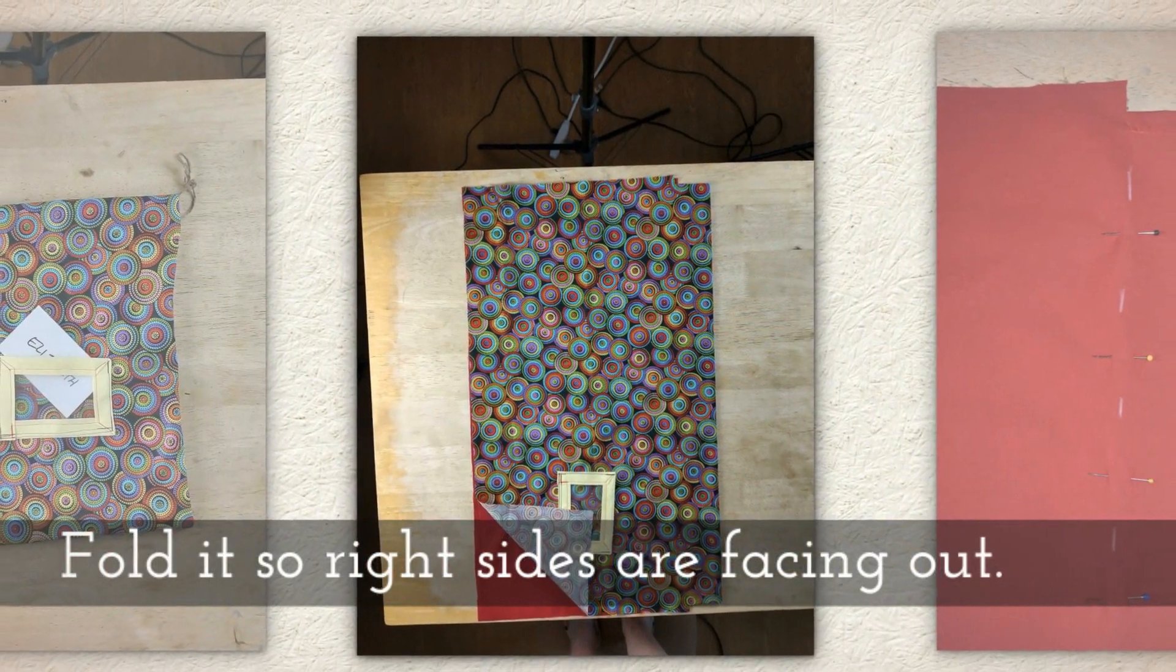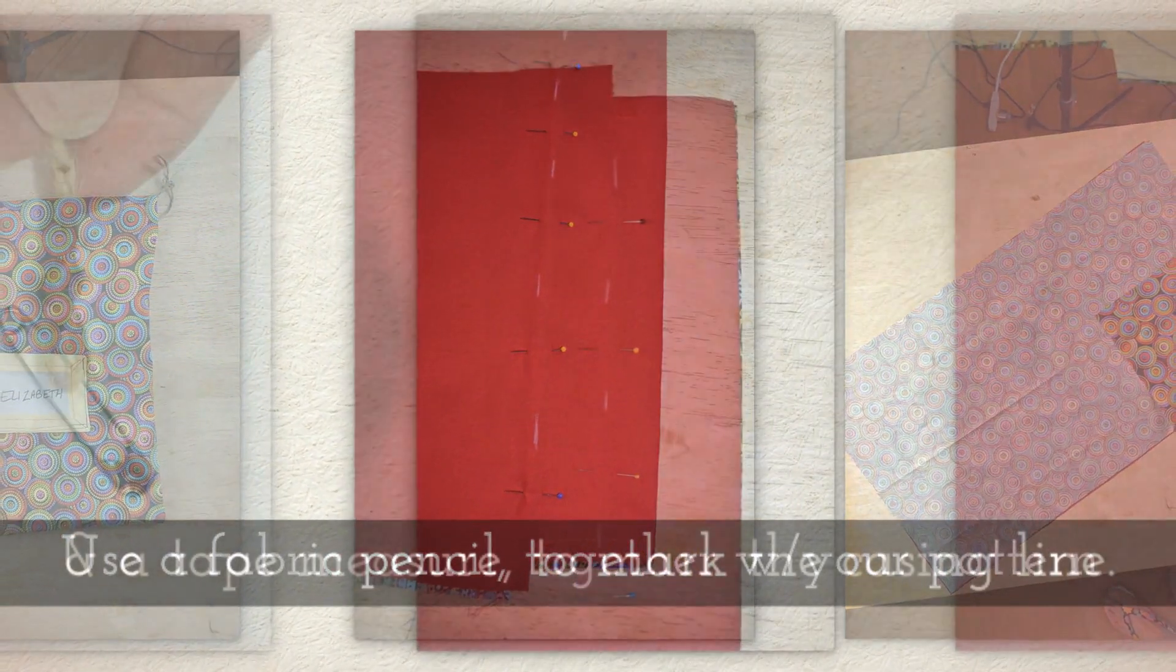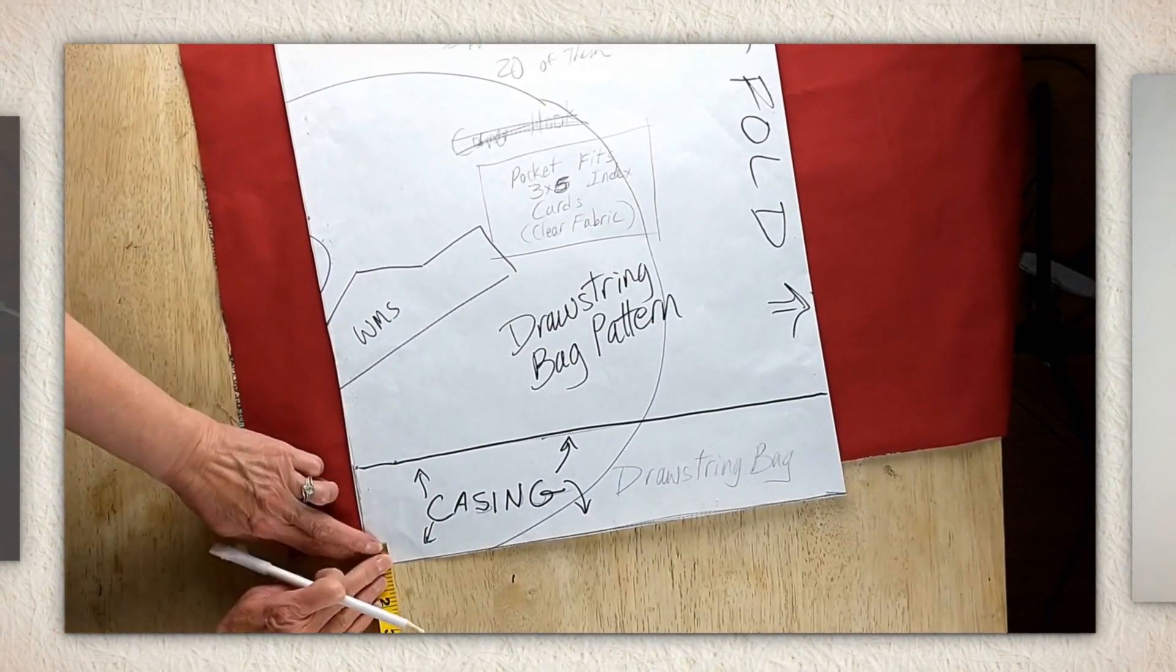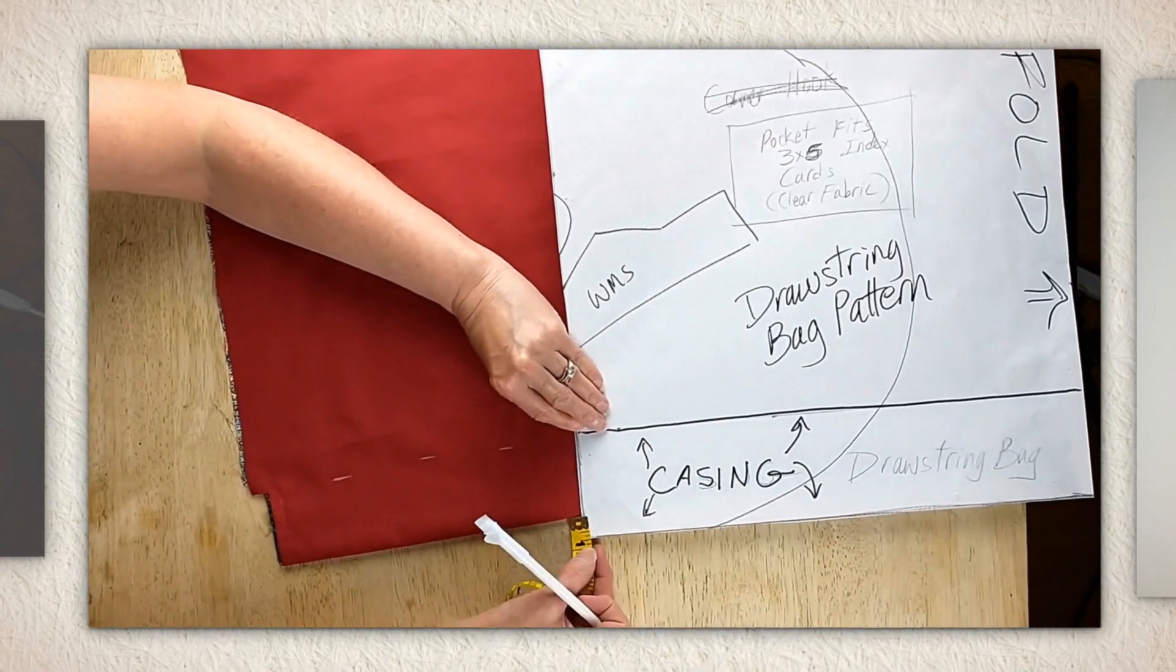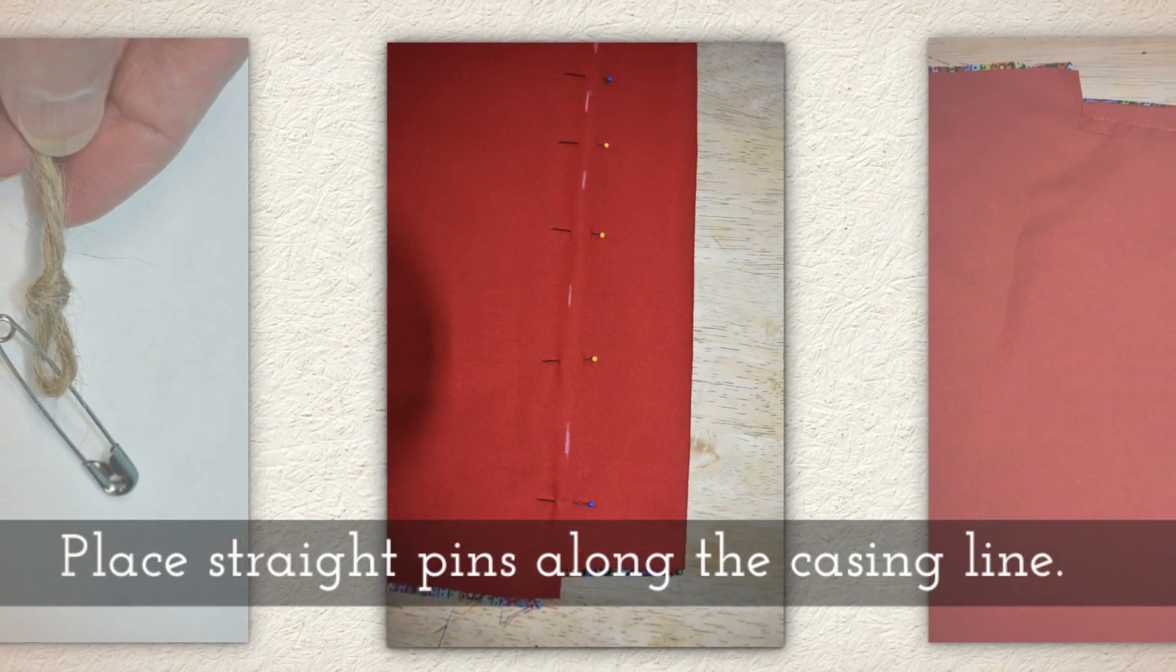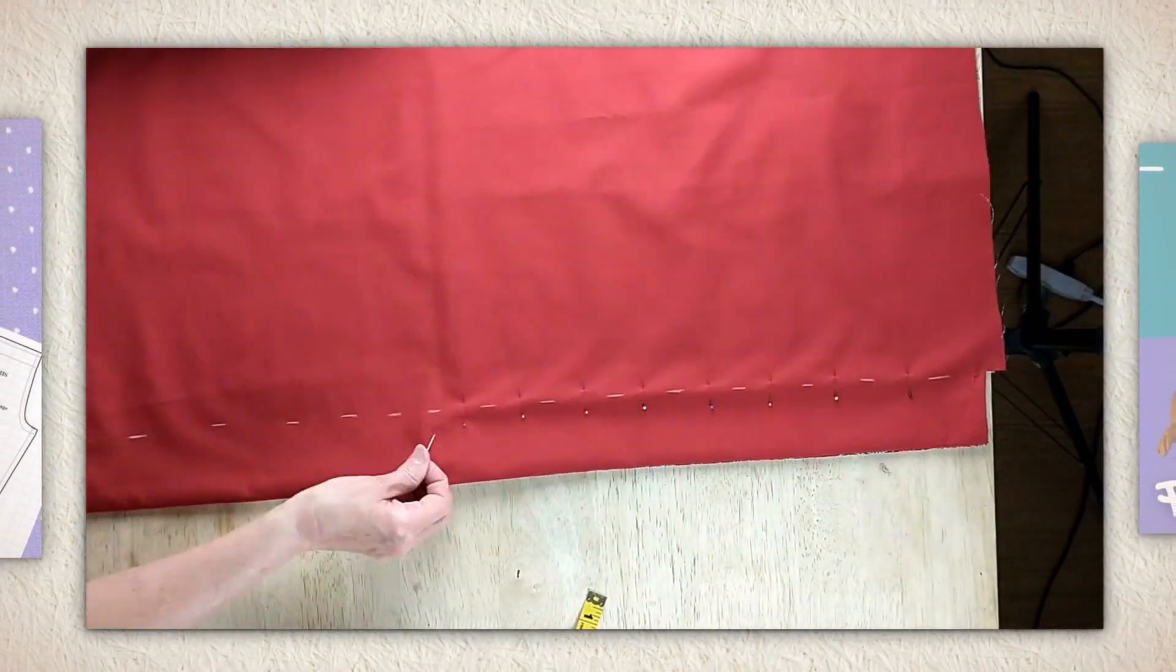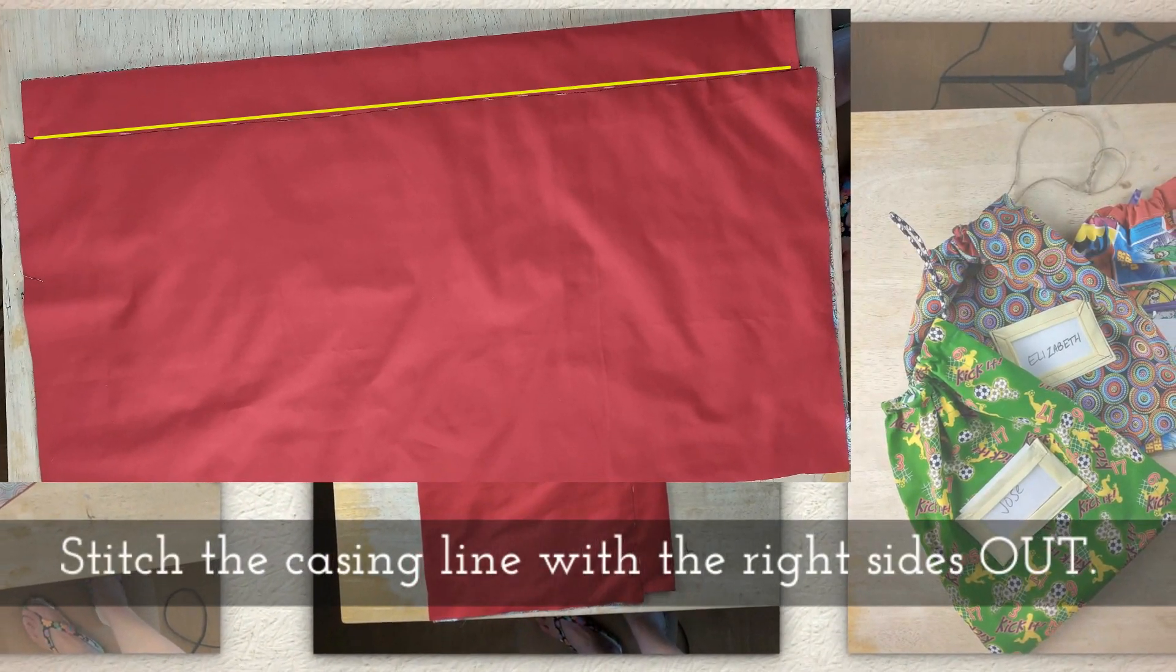And press the middle seam open with your iron. Fold it so right sides are facing out. Use a fabric pencil together with your pattern and tape measure to mark the casing line. I just laid my pattern like this. I made sure that my pattern allowed for the 5 eighths inch seam at the top. And then I just took a little white fabric pencil. I kind of made a dashy line so I know where to sew.